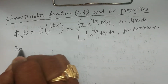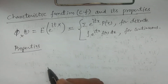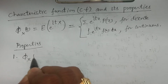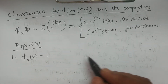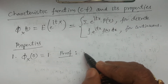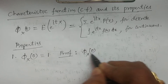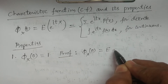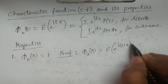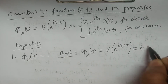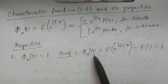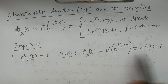Now, what are the properties of characteristic function? We learn them one by one. Property number 1: phi_x(0) = 1. We can easily prove this. By the definition of phi_x(t), phi_x(0) can be expressed as expectation of e^{i·0·x}. Since e^{i·0·x} = e^0 = 1, it follows that the expectation of 1 equals 1. Therefore, phi_x(0) = 1.